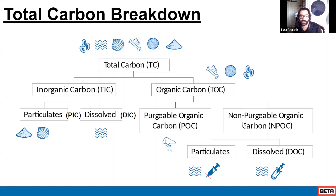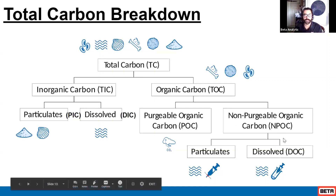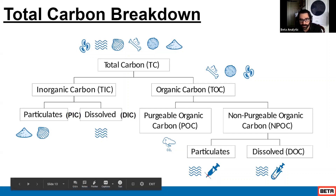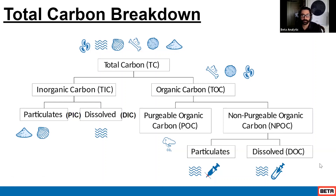What we're going to focus on is our non-purgeable organic carbons, which break down into dissolved and particulate forms. What really defines the difference between these is a filter — a 0.45 micron filter. Things that are unable to pass through this filter are considered particulate non-purgeable organic carbons, and the things that do pass through are our dissolved organic carbon pool.